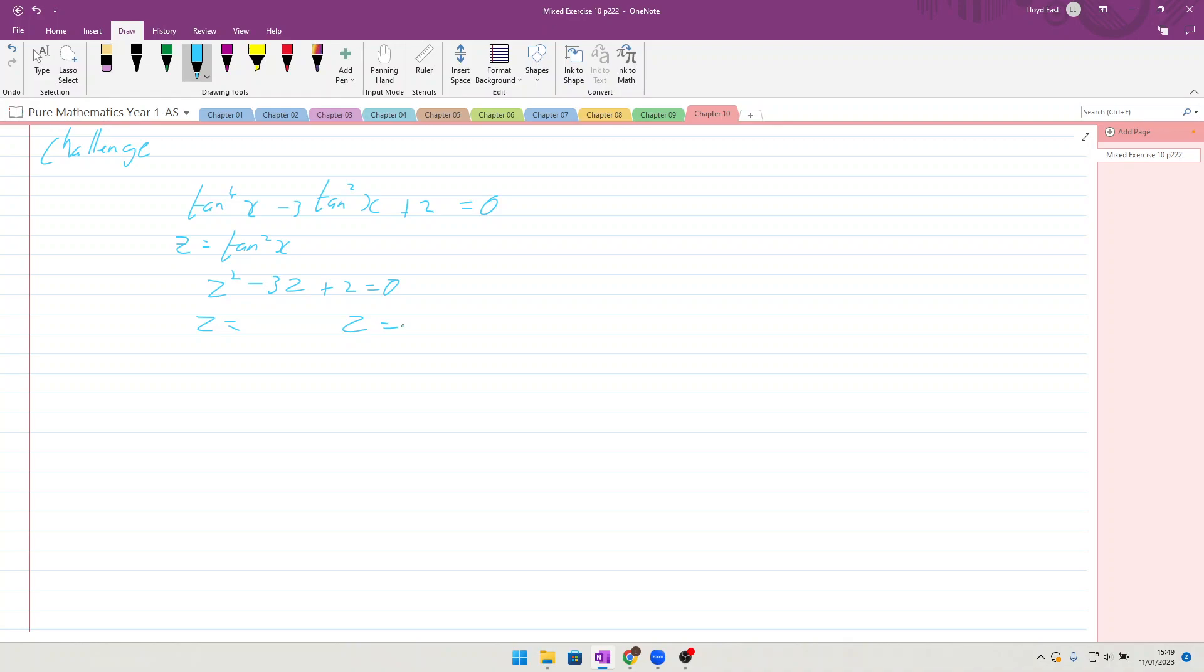Okay, so 1 minus 3 and 2, going to the polynomial solver, and that gives me z = 2 and z = 1. And so I now get that tan²x = 2 and tan²x = 1, and so I get tan x = ±√2 and tan x = ±1.